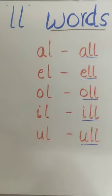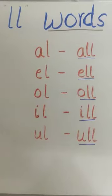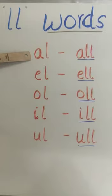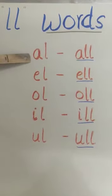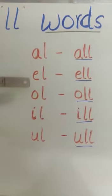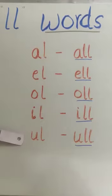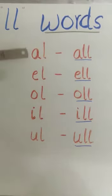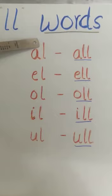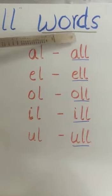The rule for double L is: if a word has one vowel—that is A, E, O, I, or U—and it ends with L, then L becomes double.